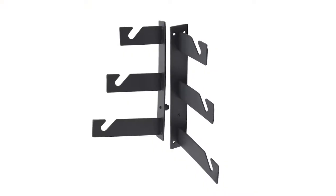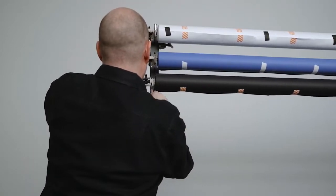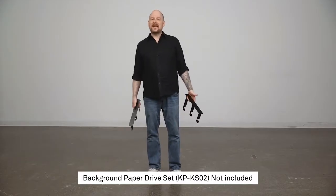Hello and welcome to this short video on Kupo triple hooks for the background paper drive sets. The Kupo triple hook set enables you to mount three rolls of seamless backgrounds with background paper drives to effortlessly raise and lower them without the need for pesky ladders.